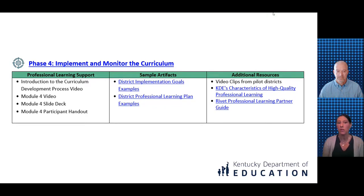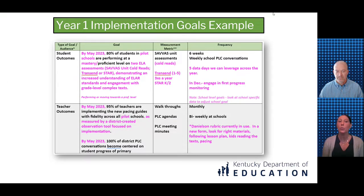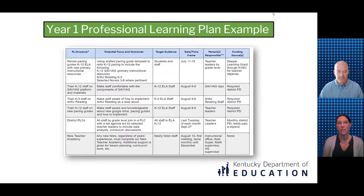In addition to the key tools, the CDP also contains an appendix and toolkit that provide more support for implementing each phase. The Phase 4 Toolkit includes the professional learning module and associated resources, sample artifacts from districts around the state, and video clips from districts sharing their experience. One resource is the Rivet Professional Learning Partner Guide, which offers school systems a searchable database of national and local PL providers to support implementation of HQIRs. We also want to highlight artifact examples from Perry County, including a year one implementation goals template and a year one professional learning plan showing thoughtful consideration of focuses, structures, audiences, timeframes, responsible parties, and funding sources.